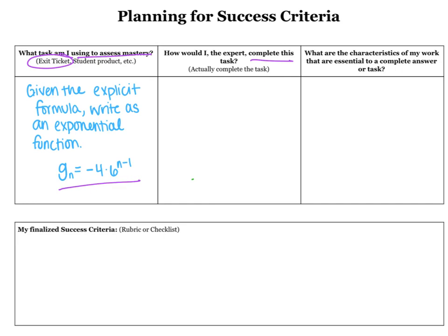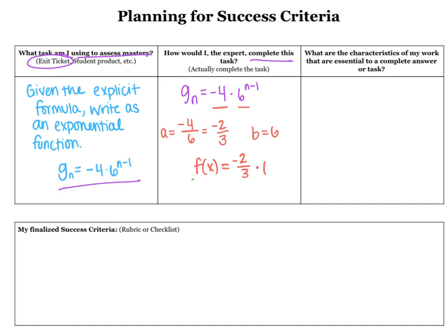I'm just going to work through this process. So g sub n equals negative 4 times 6 to the n minus 1. The first thing I'm going to do is pick out my initial value — my first term — and the common ratio. I know that negative 4 is my first term and 6 is my common ratio. My next step is to divide those: negative 4 divided by 6, which gives me my A — negative 2 over 3. And I know that my B is my common ratio, which is 6. So putting it together: f of x equals negative 2 thirds times 6 to the x.